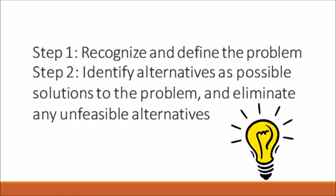Step two: identify alternatives as possible solutions to the problem and eliminate any unfeasible alternatives. These may include make or buy a product, add or retain a product line, shut down or continue operations, accept or reject a special order, and process further or sell at split-off point.